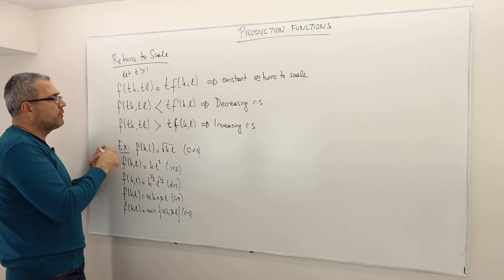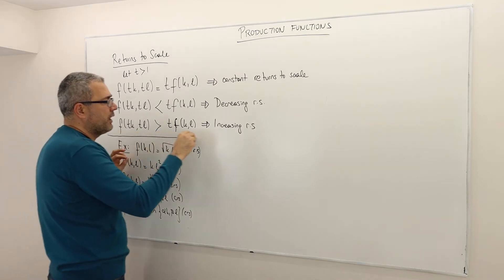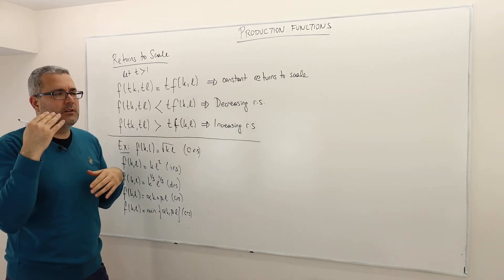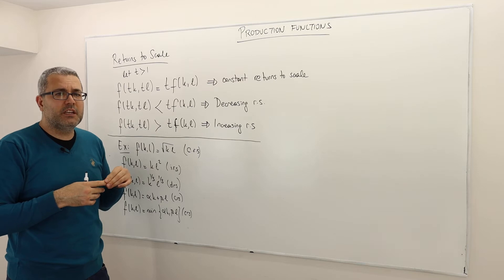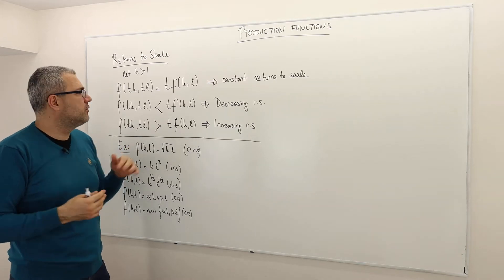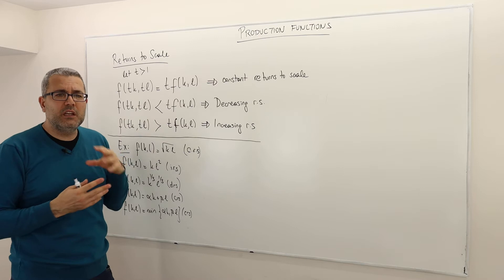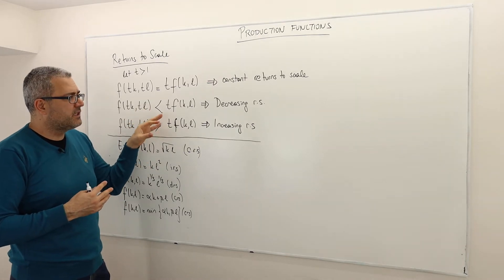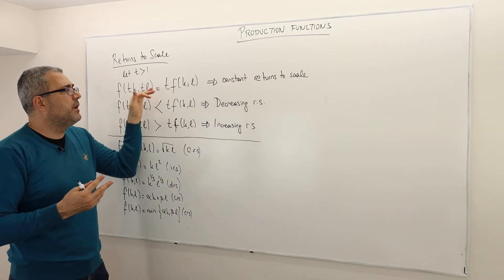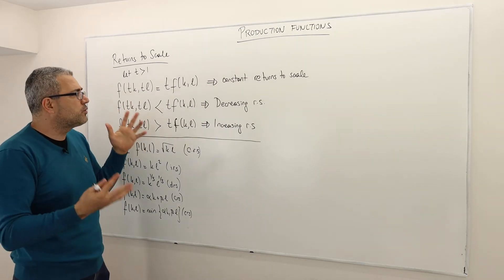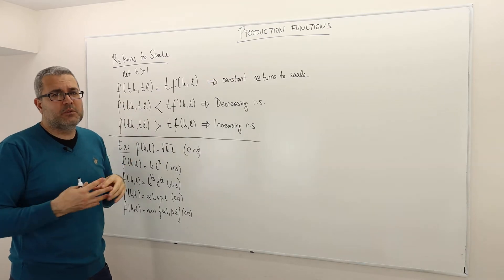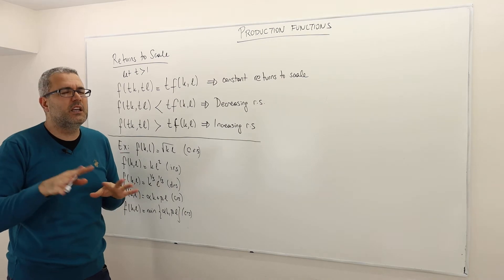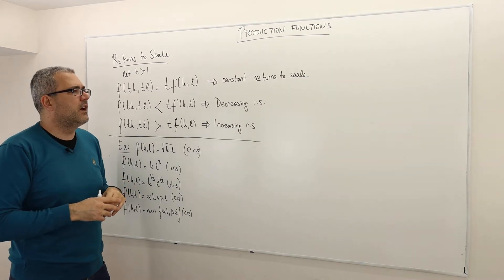This is a classification of production functions. Remember, we talked earlier about decreasing marginal productivity, and that has a lot to do with decreasing returns to scale. In real life, most production functions represent decreasing or constant returns to scale. Most numerical examples we'll use are constant returns to scale because they are easier to work with analytically.